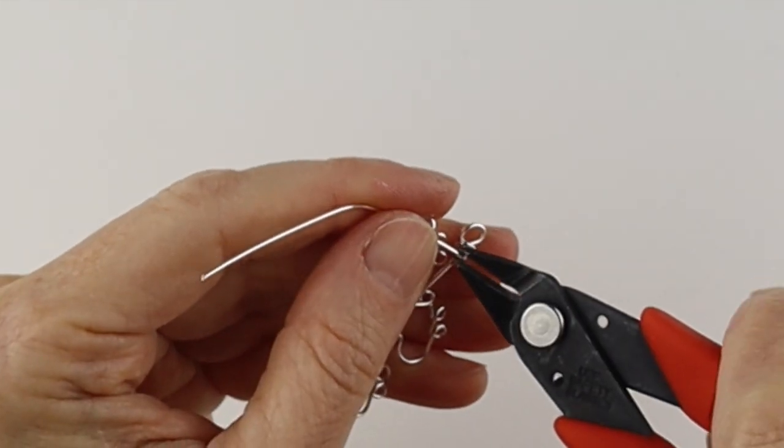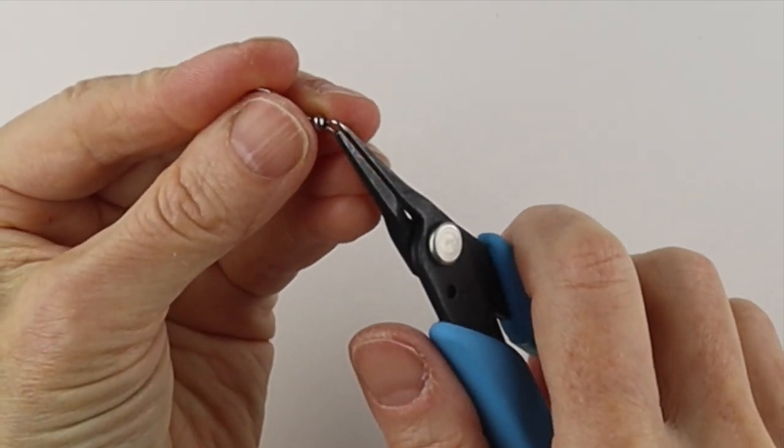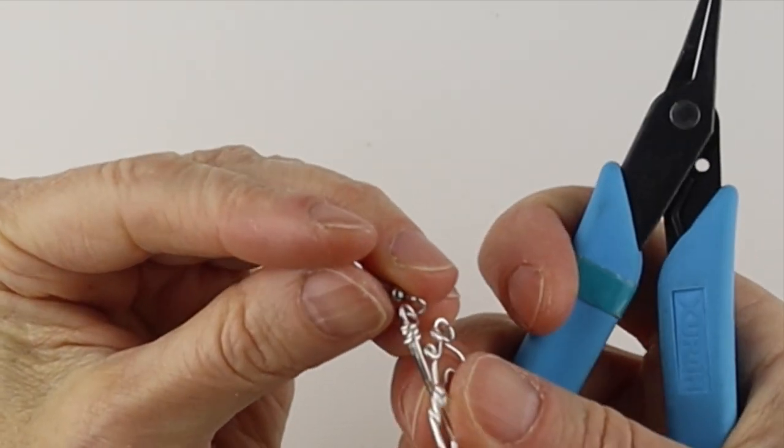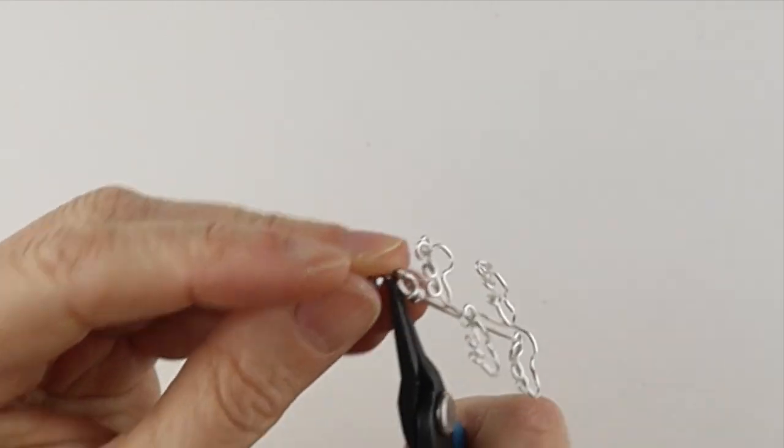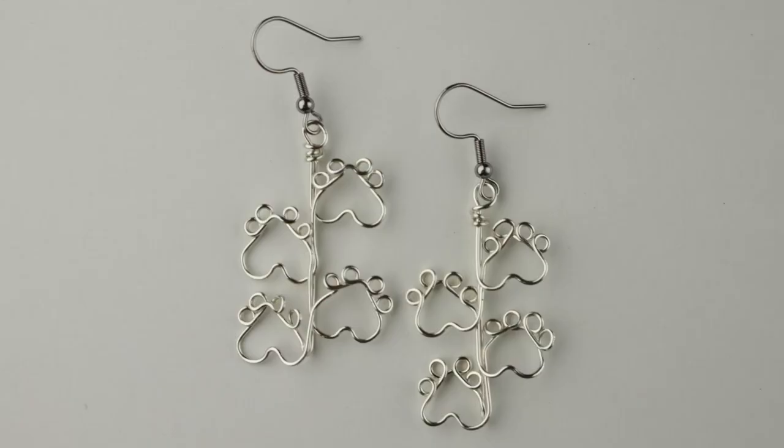So now we're going to clip that and then we'll get our earring hook, open it up, stick it on. There we have our super cute multiple paw print earrings.